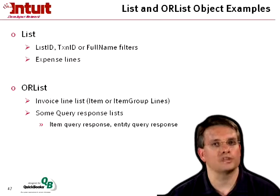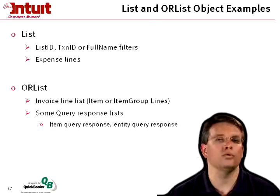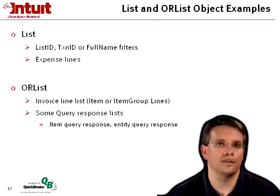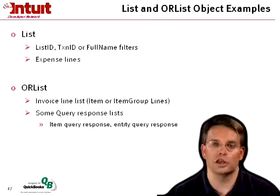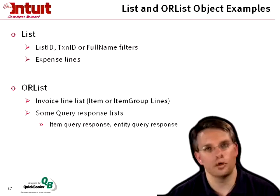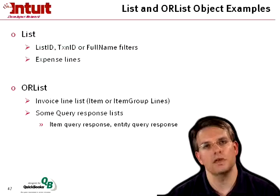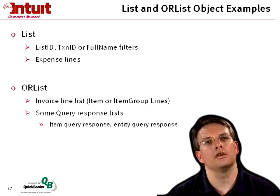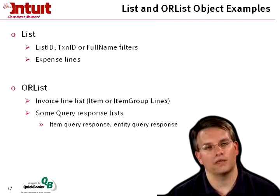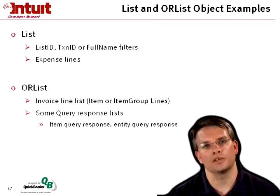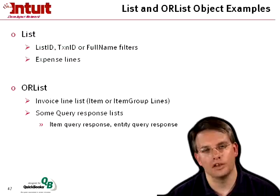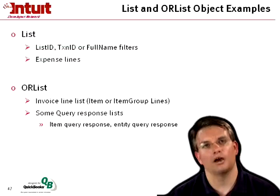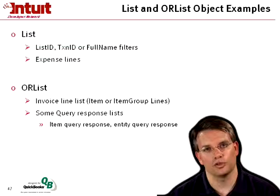There are some query responses. If you are doing a high-level query, such as an entity query, that could return customers, employees, vendors, or other names, then you're going to get back an Or list within that entity query, with each element of that Or list being either a customer ret, a vendor ret, an employee ret, and so forth.